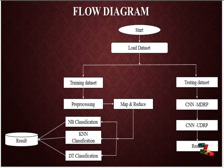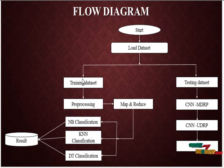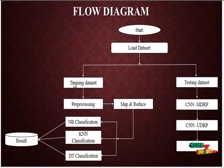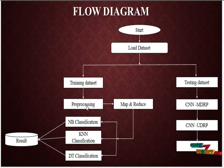Next we discuss our flow diagram. First, we load our dataset for the entire process — two types: a training dataset and a testing dataset. We first load the training dataset, referred to as the S dataset. After loading, we perform pre-processing to delete unwanted elements from the dataset.